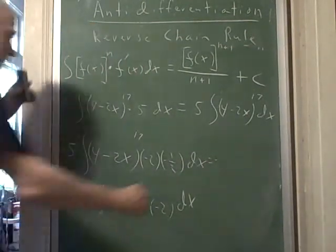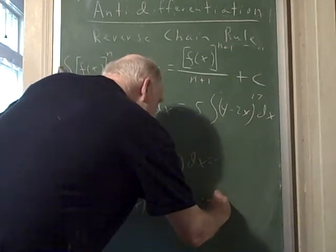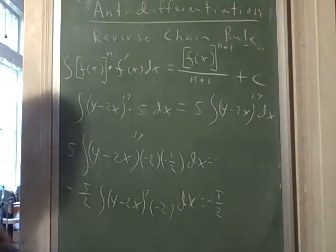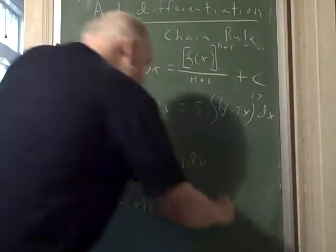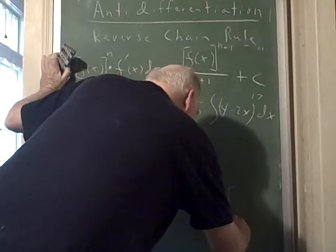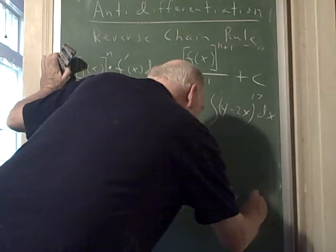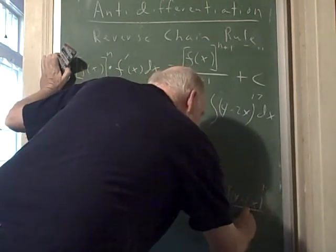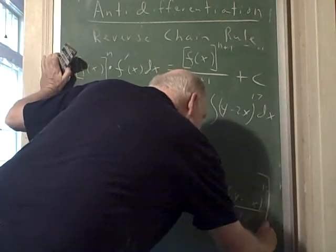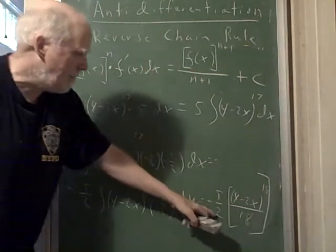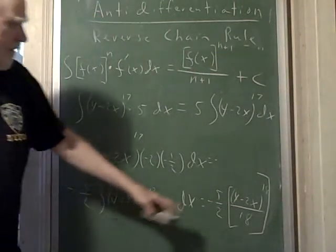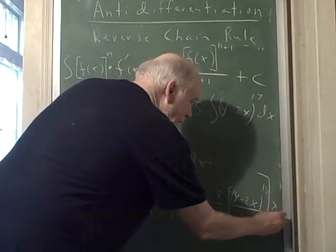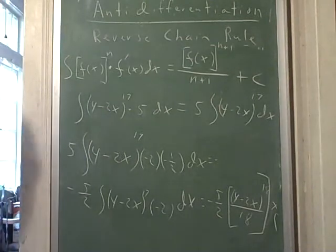And my answer is negative 5/2 times 4 minus 2x to the 18th power over 18. I can simplify that—I get negative 5/36—but plus any constant I want to add. I've barely got my constant in there.